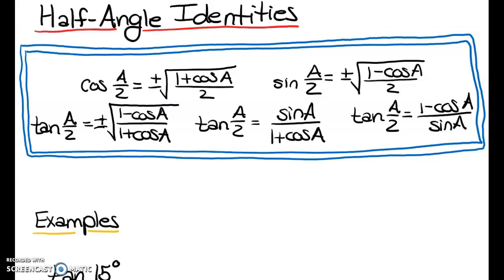Notice what's different: cosine of A/2 only has one formula, and so does sine, whereas tangent of A/2 has three formulas you can use. Always pick the easiest formula when working with tangent. Also notice that cosine of A/2, sine of A/2, and one of the tangent formulas have a plus-or-minus in front of them — that's a really key point.